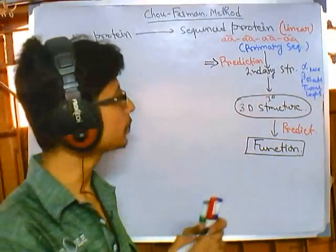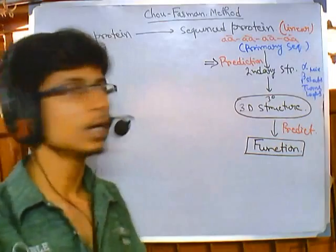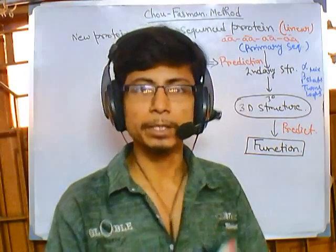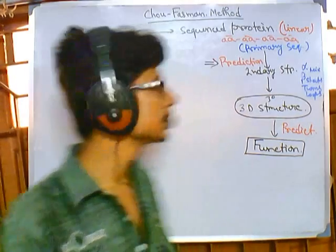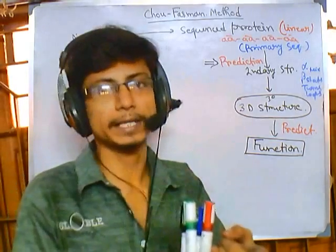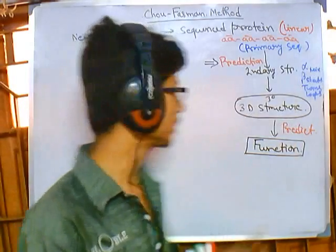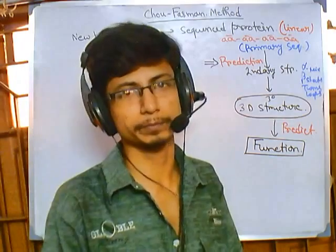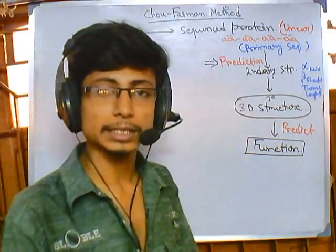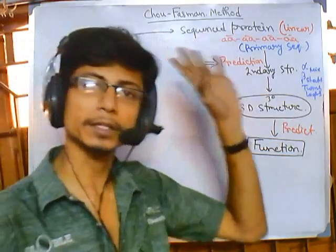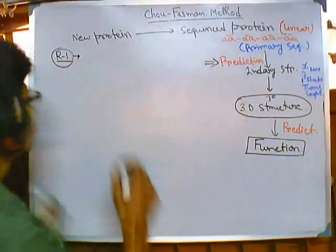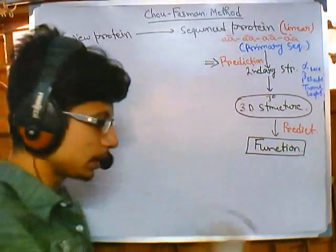The Chou-Fasman method converts the primary sequence into secondary structure. This is done by computer systems through programming. There are some rules provided to the programs so that they modify input data accordingly. We will try to understand how the computer moves from the primary sequence to the secondary structure and what rules govern this process. There are three different rules actually. Rule one is what defines a helix or beta sheet.